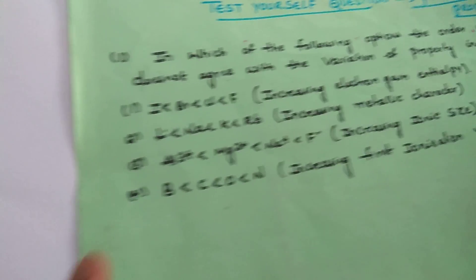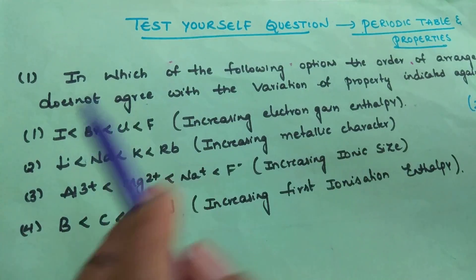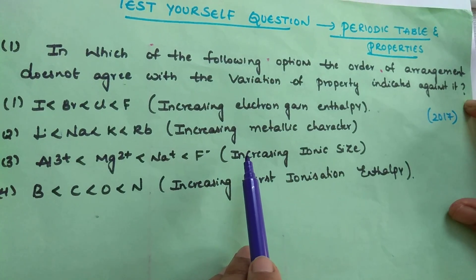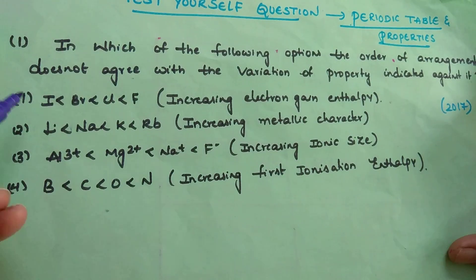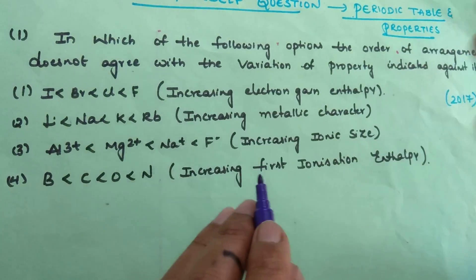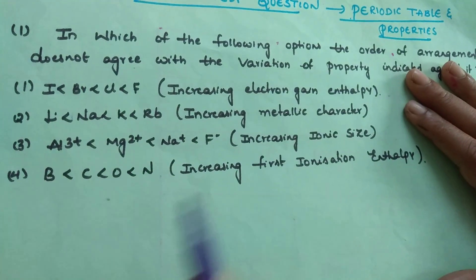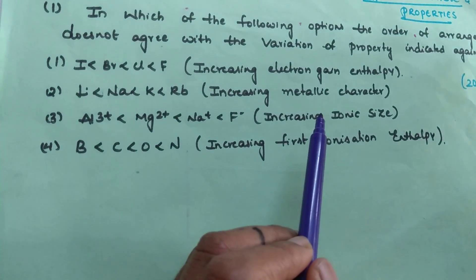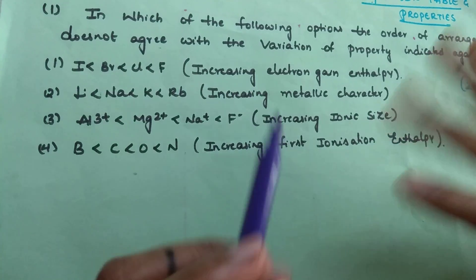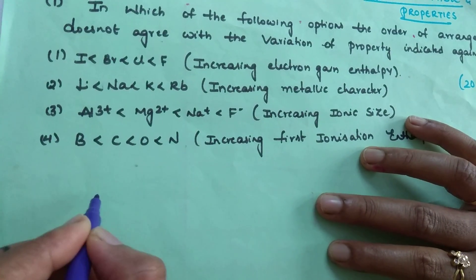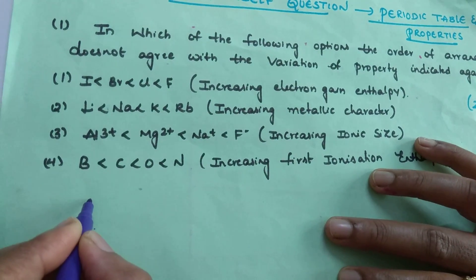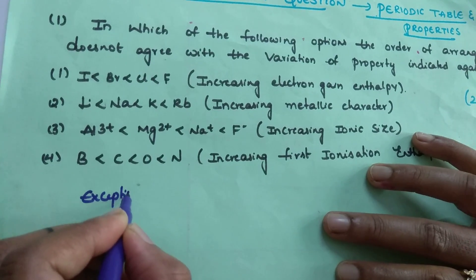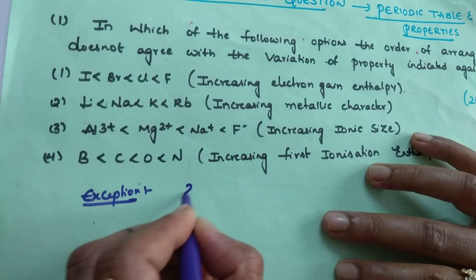Next question: in which of the following options does the order of arrangement not agree with the variation of property indicated? You have to identify which trend is not correct. For example, electron gain enthalpy — the amount of energy released when you add an electron. Here I will tell you, the exception is for 2p and 3p elements.